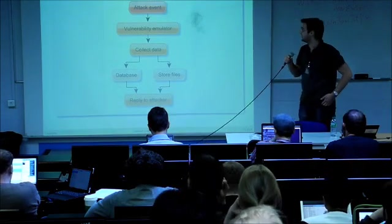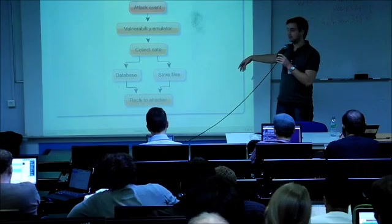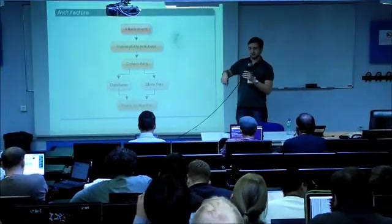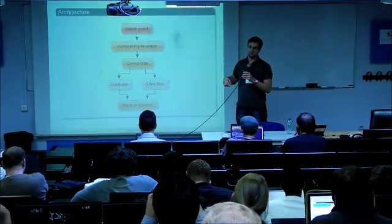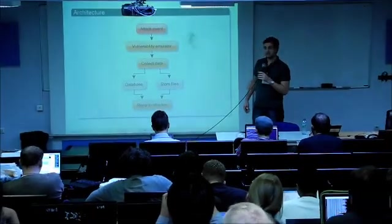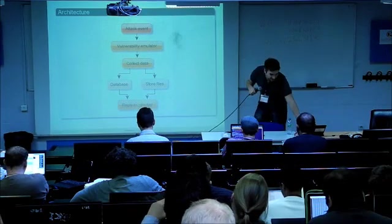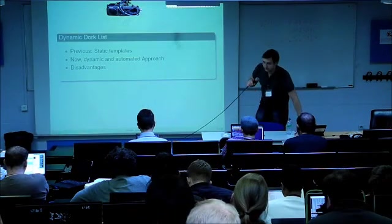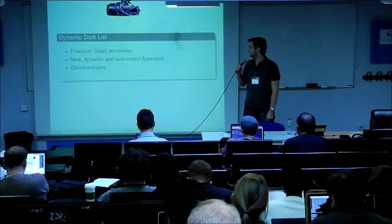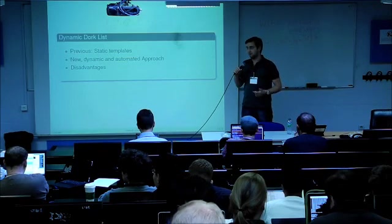Let's look at the architecture. It's very simple. There's incoming event, which means a request from an attacker. We have a vulnerability emulator, which is simply just looking at the injected files, looking for some echoes, which produce some feedback for the attacker and put that in the reply. We collect the data which gets injected, put it in a database, store the files, and reply to the attacker. So very basic, very simple.